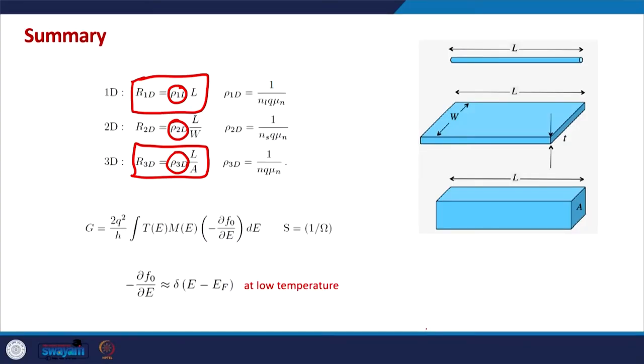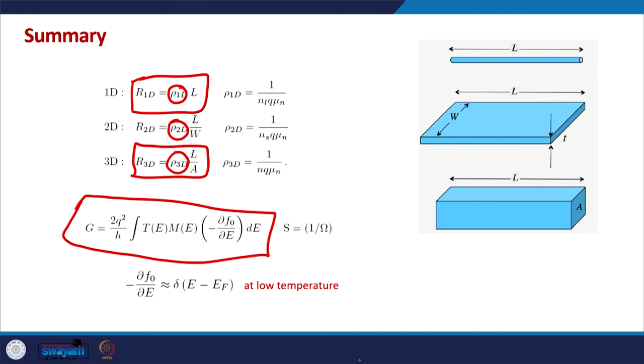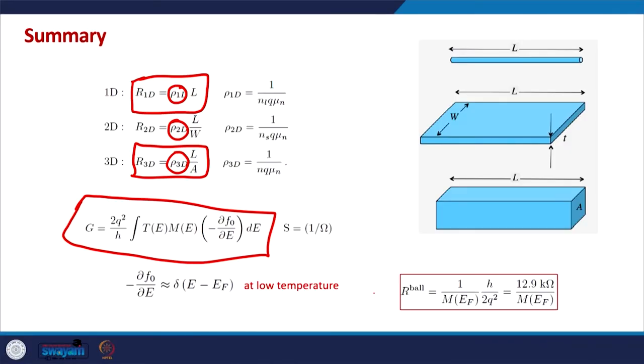From our formalism of the general model of transport, we deduced the expression for conductance: G = (2q²/h) × ∫ T(E) M(E) × (−∂f/∂E) dE. At low temperatures in a ballistic conductor, this conductance reduces to (2q²/h) × M(EF). This is at T = 0 Kelvin for the ballistic case.